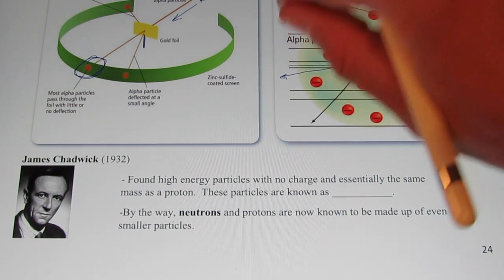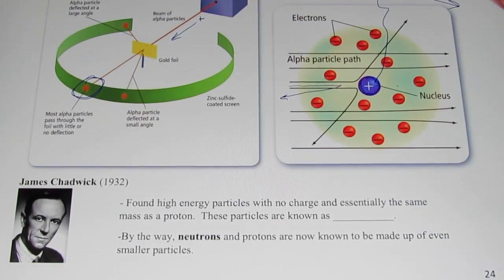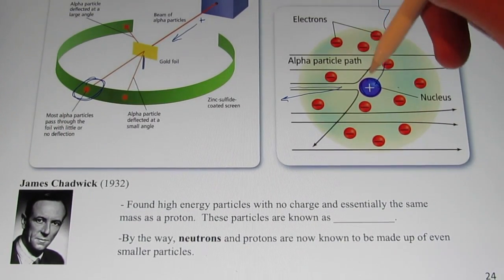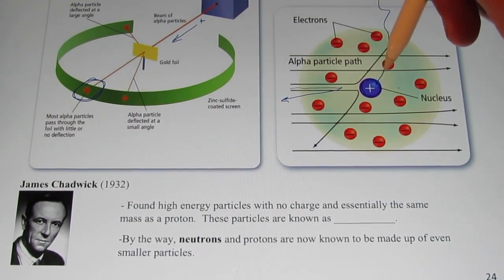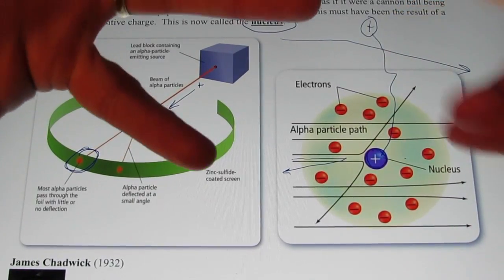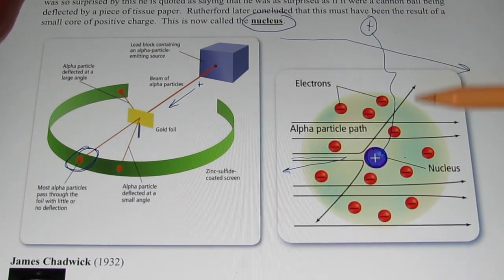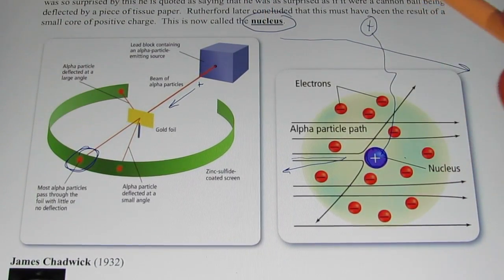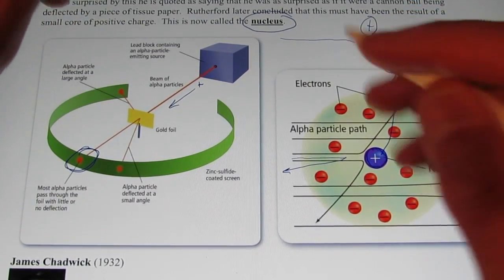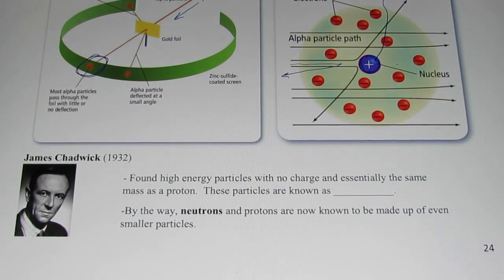We also talked about the gold foil experiment by Ernest Rutherford, and we found that matter is composed mainly of empty space. There's a huge distance between the nuclei of atoms, and nuclei make up most of the mass of an atom. If there's a huge distance between them, that means matter would be mainly empty space. That space between them does have electrons, and remember, electrons are very, very small.